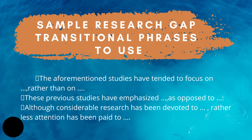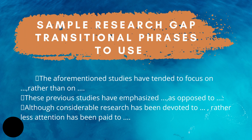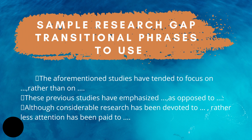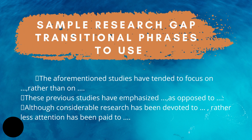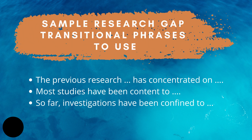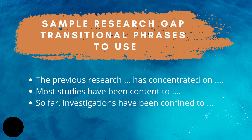More transitional phrases you can use: 'The aforementioned studies have tended to focus on [X] rather than on [Y].' 'These previous studies have emphasized [X] as opposed to [Y].' 'Although considerable research has been devoted to [X], rather less attention has been paid to [Y].' 'The previous research has concentrated on [X] / most studies have been content to [X].' And lastly: 'So far, investigations have been confined to [X].'